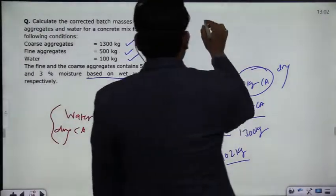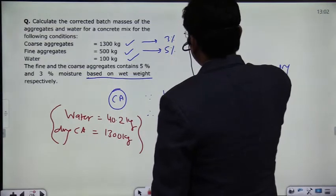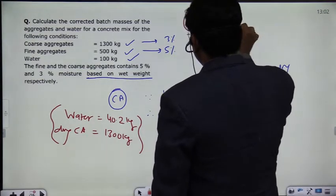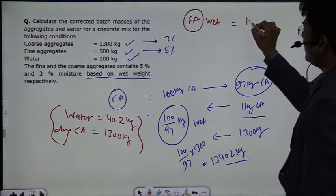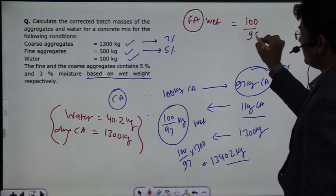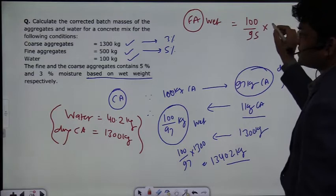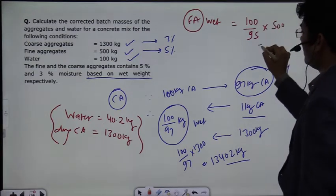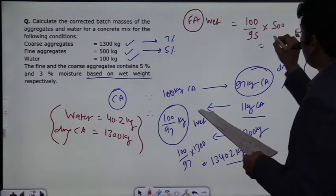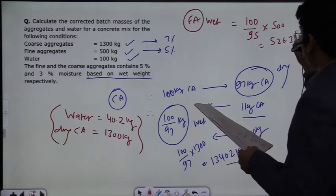Similarly, we will calculate the fine aggregate. The fine aggregate has 5% moisture, so we apply the same approach: 100 divided by 95, multiplied by the required amount of 500 kg. Solving this gives a result of 526.3 kg of fine aggregate to batch.